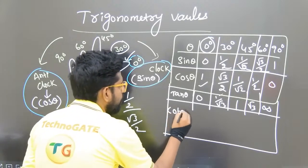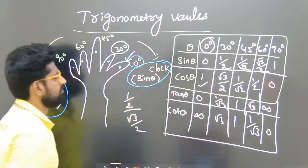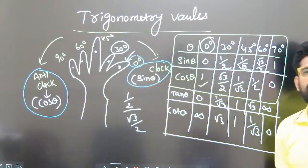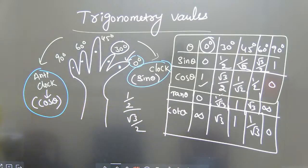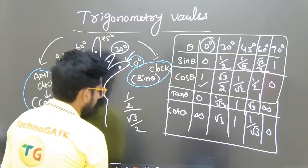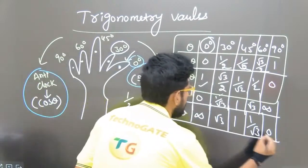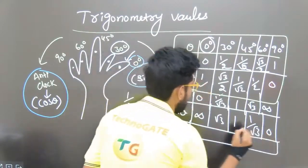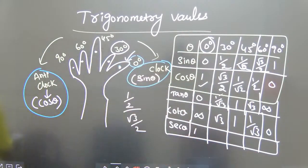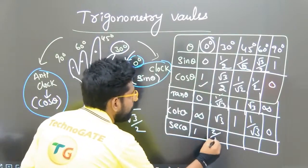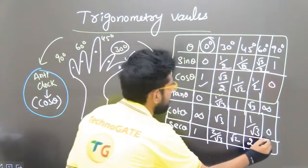For cot theta, just reverse the tan values: infinity, √3, 1, 1/√3, and 0. For secant theta, take 1 by cos theta. So cos values reversed give: 0° → 1, 30° → 2/√3, 45° → √2, 60° → 2, and 90° → infinity.